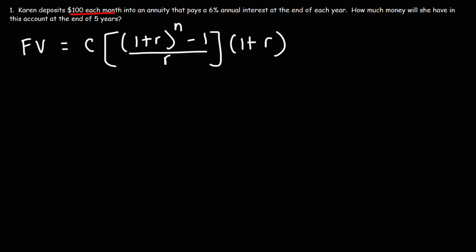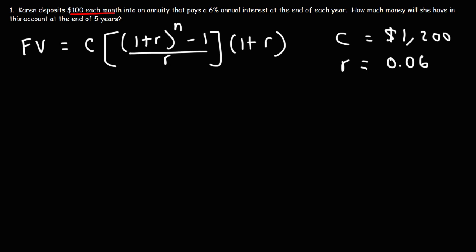Karen deposits a hundred dollars each month, so how much money is she putting into this account every year? There are 12 months in a year, so a hundred times 12 is $1,200 — that's her yearly deposit. The interest rate is six percent, but you need to convert it to a decimal by dividing by 100, which gives 0.06. And n is the number of years, which is five.